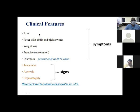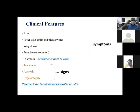Clinical features of amoebic liver abscess: pain, fever with chills and night sweats (usually when secondarily infected), weight loss, and jaundice — which is very uncommon. Diarrhea is present in only about one-third of cases. In clinical experience, it is rare to see simultaneous active amoebic dysentery with amoebic liver abscess at presentation. Signs include tenderness, anorexia, and hepatomegaly.